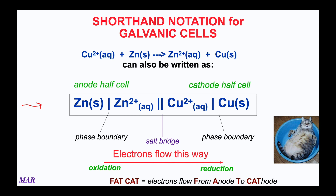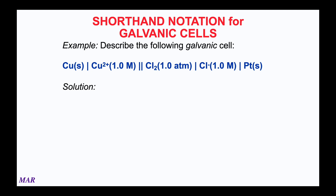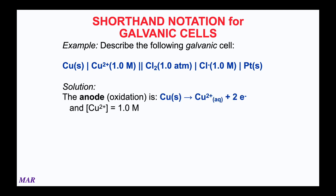Here's a shorthand galvanic cell to describe using the notation shown. Electrons are flowing from the left to the right, so the anode, the site of oxidation, is on the left. We would write copper going to copper 2+ — a two-electron process. The 1.0 molar means the copper 2+ concentration is 1.0 moles per liter, which we'll see can be important later.